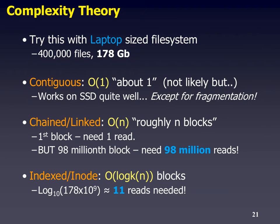Let's try it out in real life. Chris's laptop has 400,000 files and 178 gigabytes. If stored contiguously, you'd get about O(1) — read any block just once, very efficient, though the disk would get very fragmented. If it's linked, it's very inefficient — O(N) is really bad. For the first block you need one read, but if you want to read the 98 millionth block in a file, you need to read 98 million blocks — you'd be there forever. If indexed with log base 10, 178 billion gives log base 10 of approximately 11, so we only need about 11 reads on average.